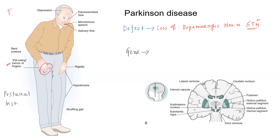The second point is rigidity. You are going to get extrapyramidal type of rigidity in patients with Parkinson's disease, otherwise known as cogwheel type of rigidity or lead pipe rigidity. Third, they will have hypokinesia or akinesia. And the fourth important point is postural instability. These are the four important features of Parkinson's disease — you can remember it with the mnemonic TRAP.